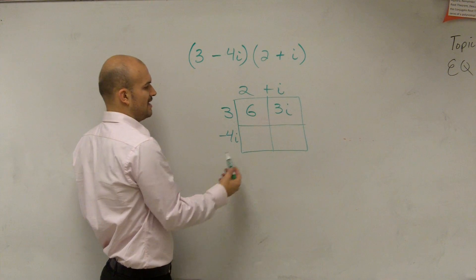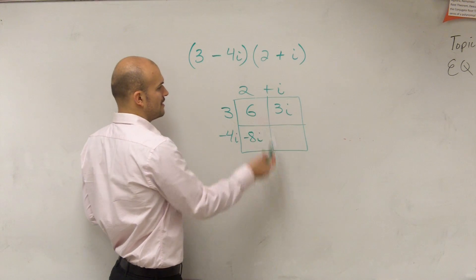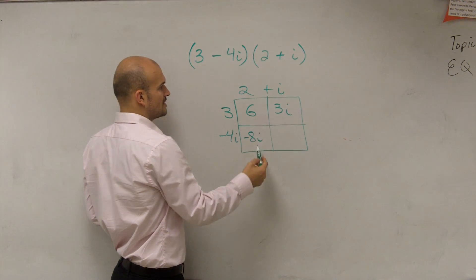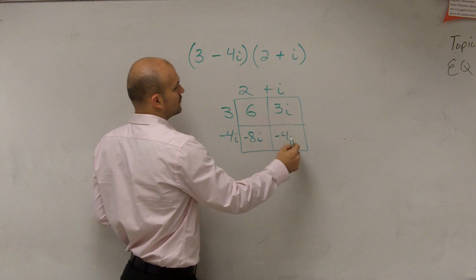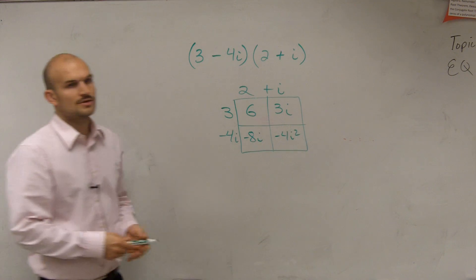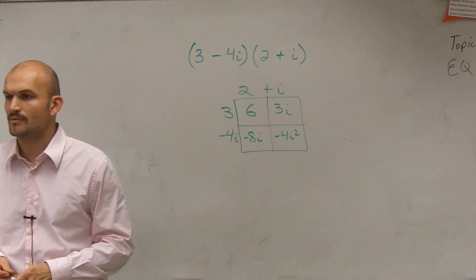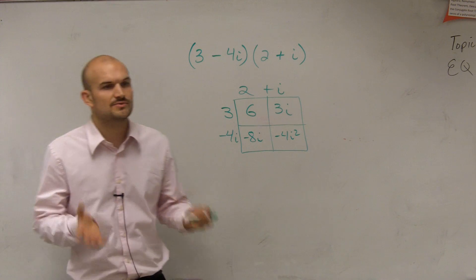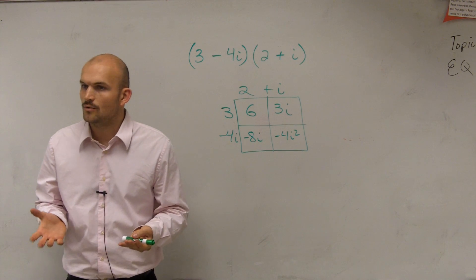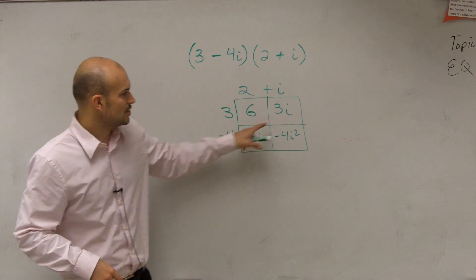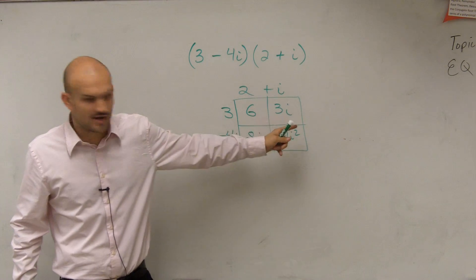2 times negative 4i is negative 8i. And negative 4i times i is negative 4i squared. When we talk about operations with complex numbers, we can combine them when they have like terms. Think of this just like your variables.